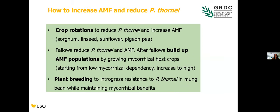For growers, you can alter the populations of these organisms in the soil through careful crop rotations. By growing a non-host of Pradylenchus thornei that also increases mycorrhizal fungi — like sorghum, linseed, sunflower, and pigeon pea — you can manipulate the levels of these organisms in your soil.